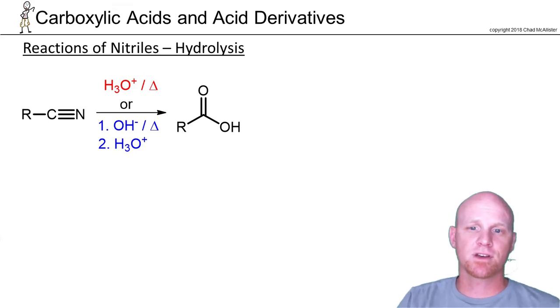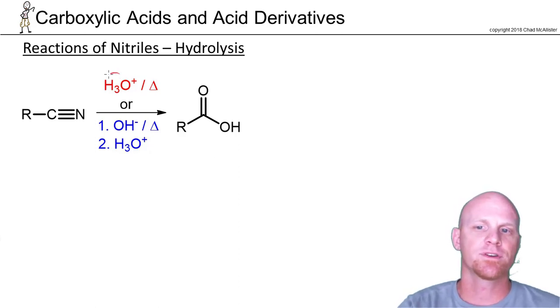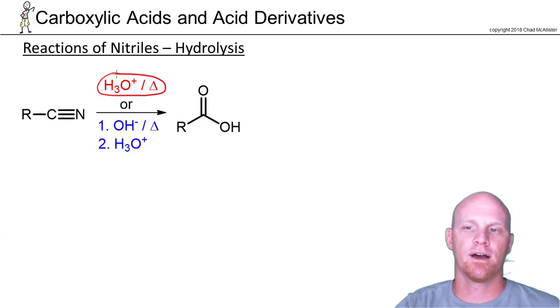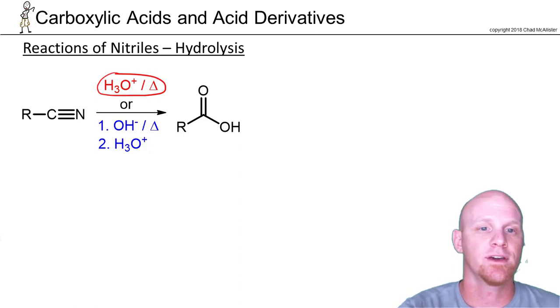Finally, we'll finish with the hydrolysis of the nitrile. We saw this earlier when we looked at the synthesis of carboxylic acids—it was one of our new ways of synthesizing carboxylic acids. I really focused on doing it under acid hydrolysis with heat, and as you recall, the intermediate for this reaction was the amide.